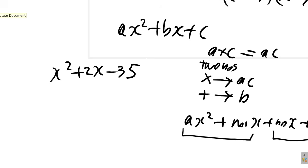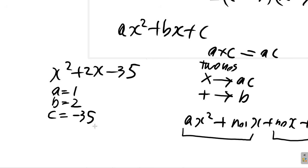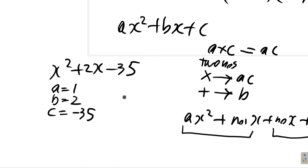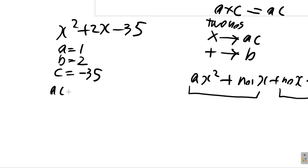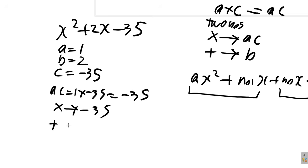Using the AC method, you must properly identify A, B, and C. In this case A is 1, because it's 1x squared. B is 2. C is negative 35, because the general form says plus C, so C is negative 35, not 35. AC is 1 times negative 35, which is negative 35. We need two numbers that multiply to give negative 35 and add to give 2.